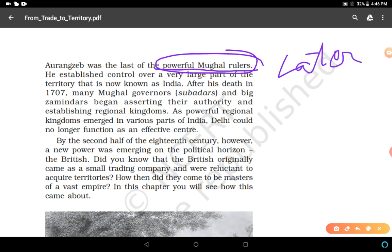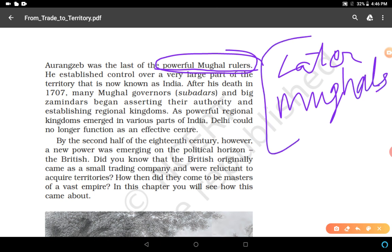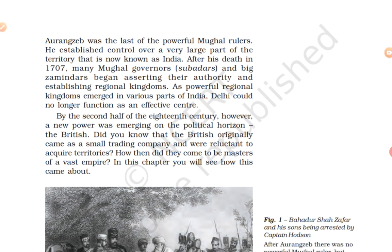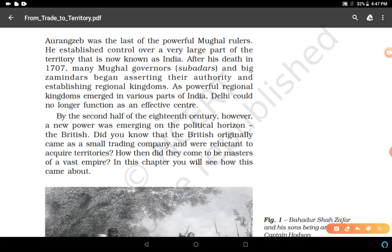After Aurangzeb, the Mughal emperors are known as the Later Mughals. They were weak rulers like Bahadur Shah the First, Jahandar Shah, Farrukhsiyar, Muhammad Shah, Shah Alam the First, and Shah Alam the Second. All these Mughal rulers were very weak and could not control the big Mughal Empire. Aurangzeb died in 1707.